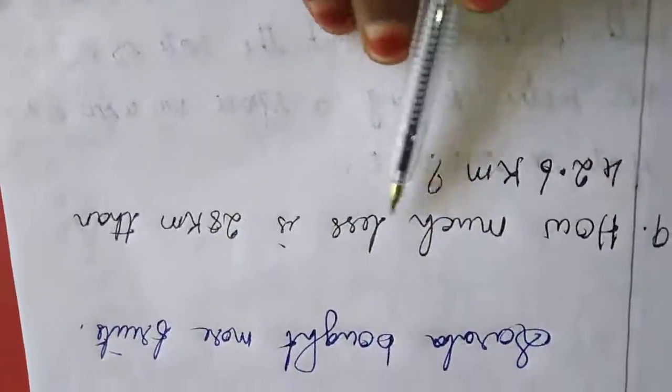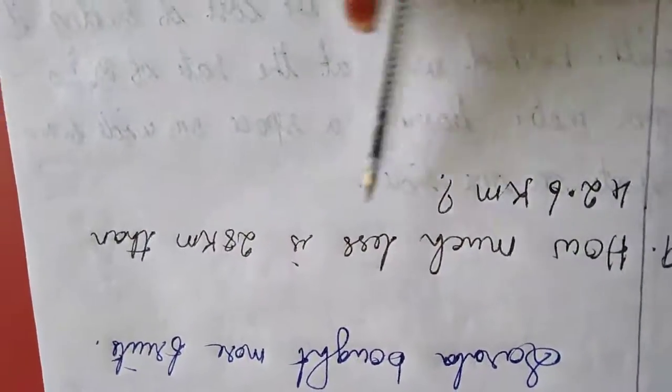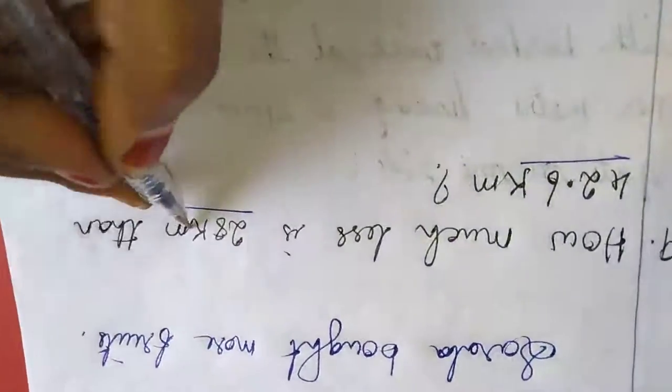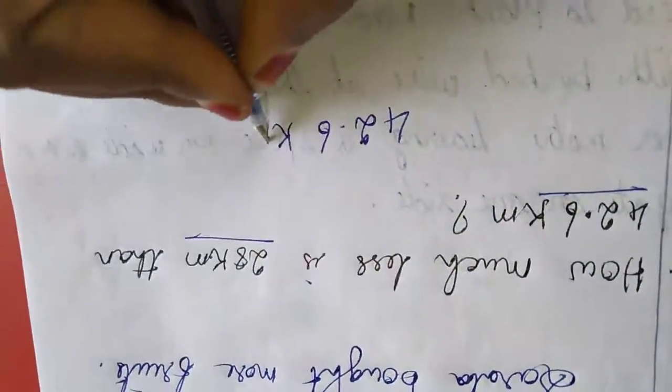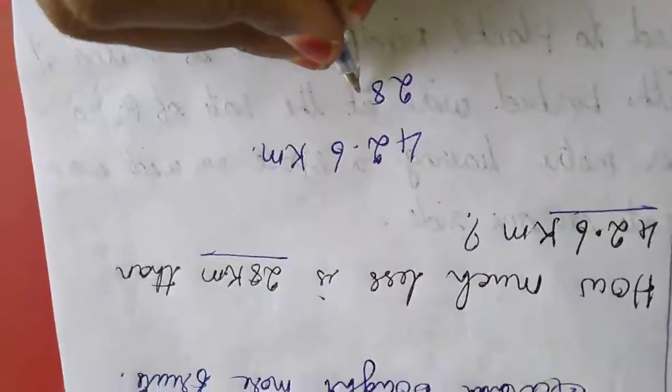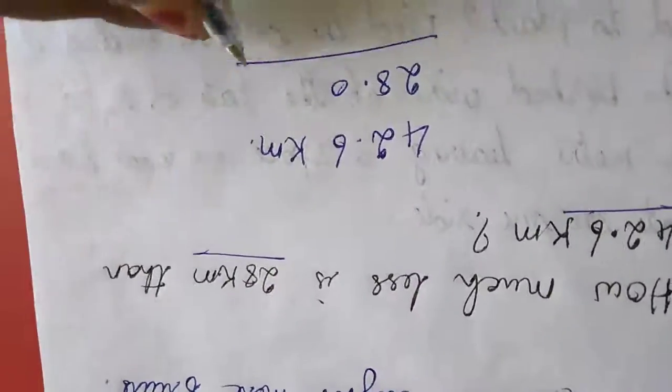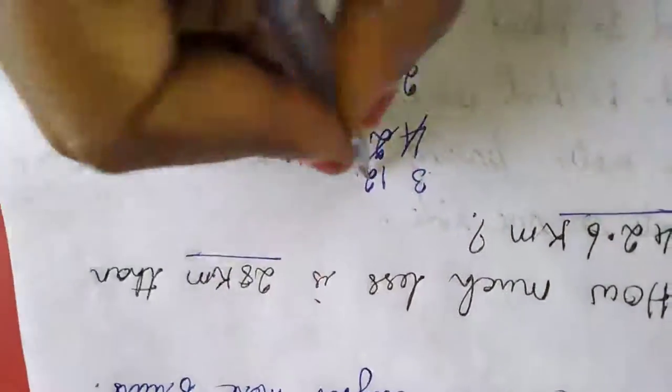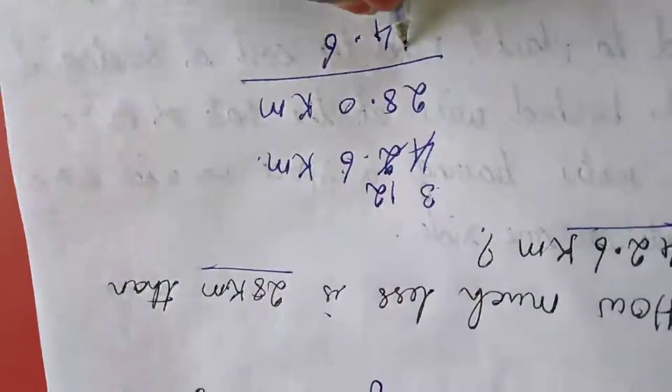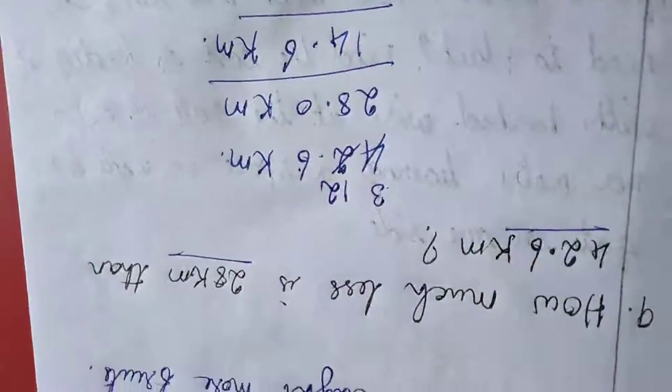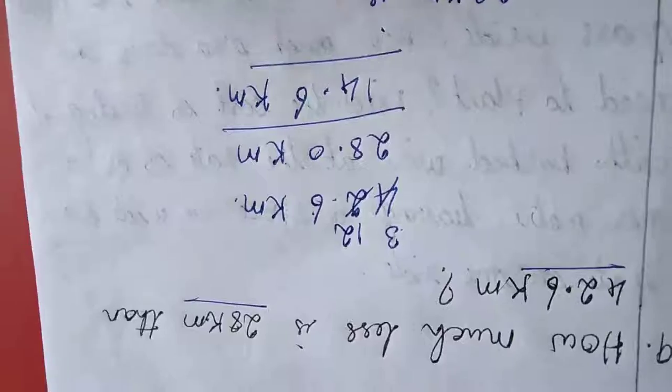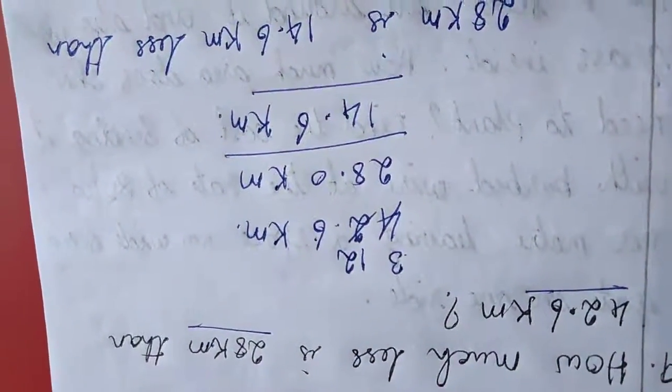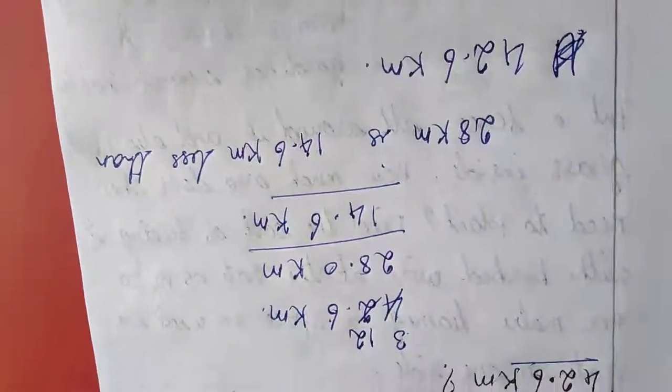Next 9th question. See here, how much less is 28 km than 42.6 km? This one is how much less than this one, so you have to subtract. 42.6 km, there is nothing in decimal, so I am keeping 0, so it will become a decimal number. 6 minus 0, 6, 1 as well as 6. So you want to get borrowed here. So this one became 12, here are 3. 12 minus 8 is 4. So 28 km is 14.6 km less than 42.6 km.